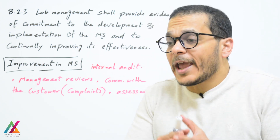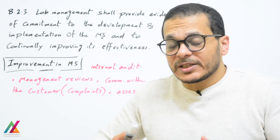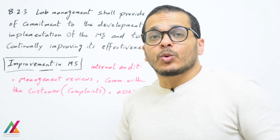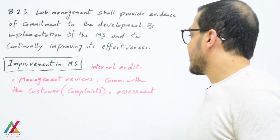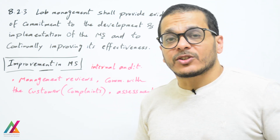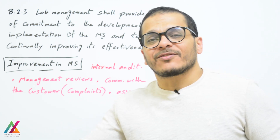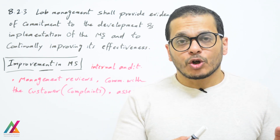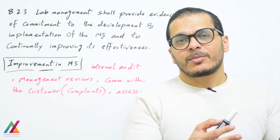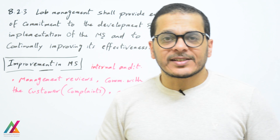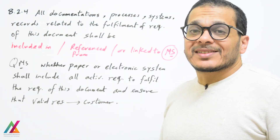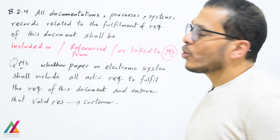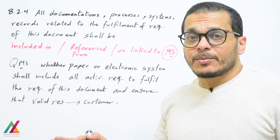Any improvement in lab activities can be discussed and explained during the annual management review. Risks identified during the year can be discussed in the management review to determine how to eliminate or reduce them. During external audits or accreditation assessments, any non-conforming work found will also lead to corrective actions. The lab shall establish the management system applying all requirements of this document, maintain work accordingly, and pursue improvement. All documentation including processes, systems, and records shall be included in or referenced from the management system.